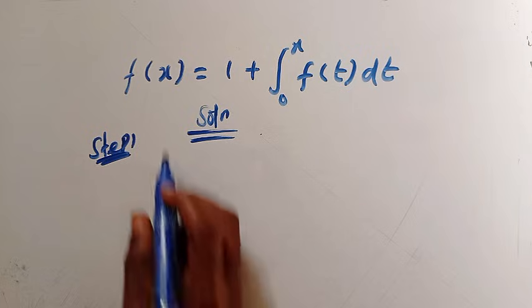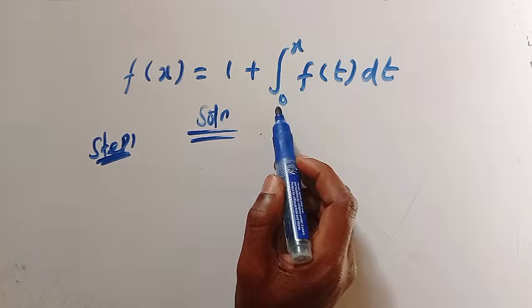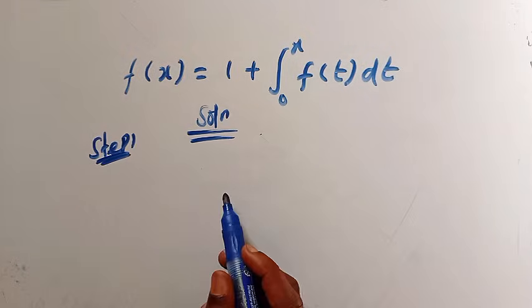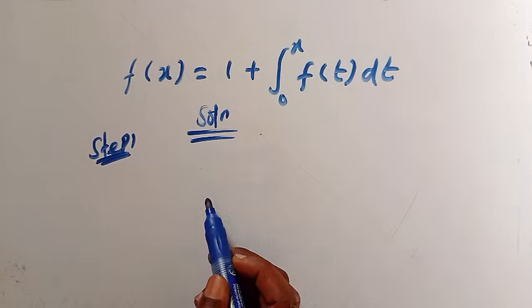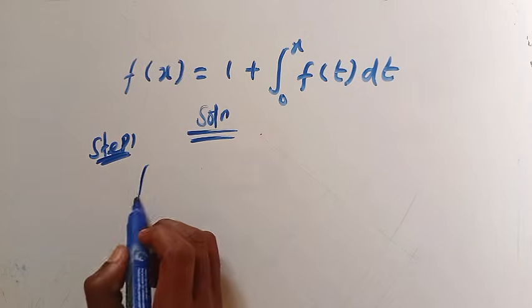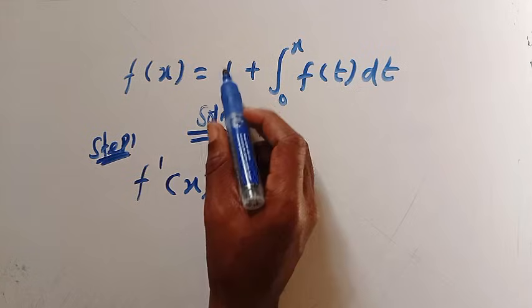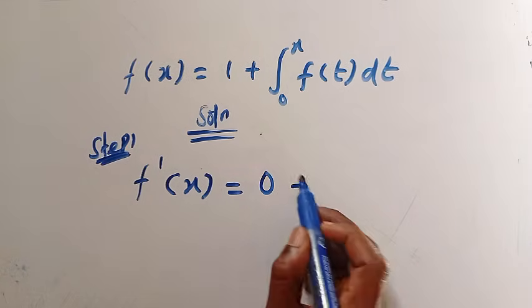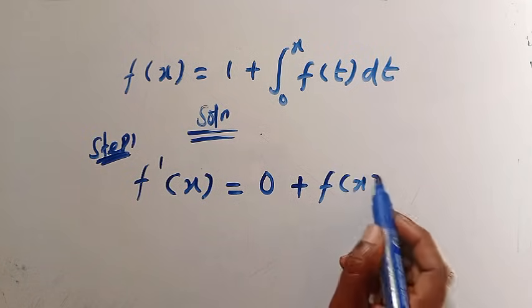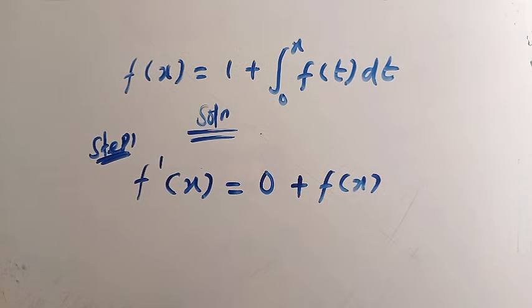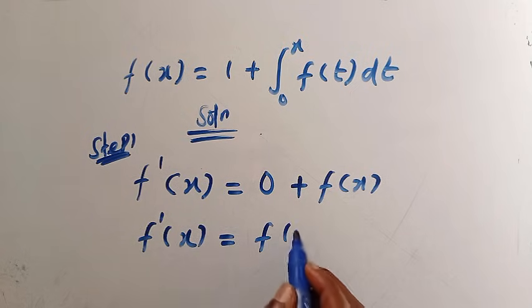And how do we know that? It's very easy, because when we take the derivative of this integral, it gives us only f of x after we have substituted the limits. So differentiating this side gives us f prime of x equals — when we differentiate the constant value, that gives us 0 — plus differentiating this integral completely, we are going to have f of x. So therefore, we have f prime of x equals f of x.